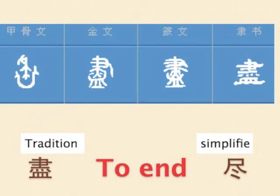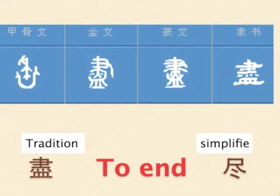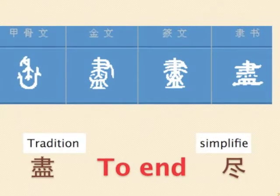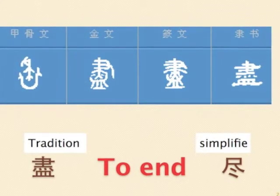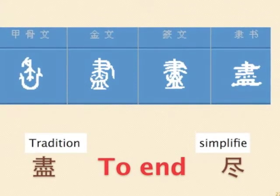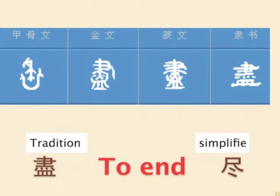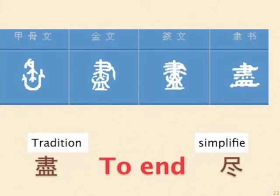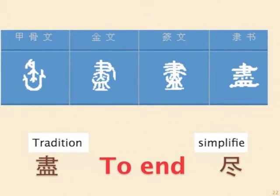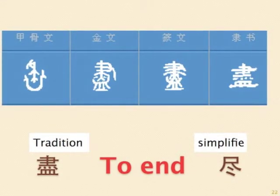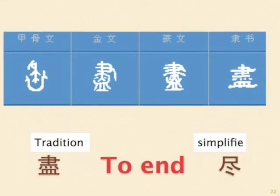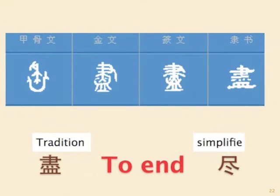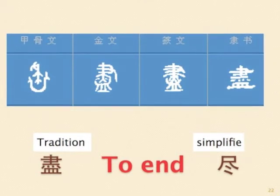Next word: to end. The ancient script represents that after dining, a brush is used to clean the bowl. The traditional form increases the strokes to become more complicated. The simplified form adopts the word created by calligraphy artists to reduce the strokes of both upper and lower parts.